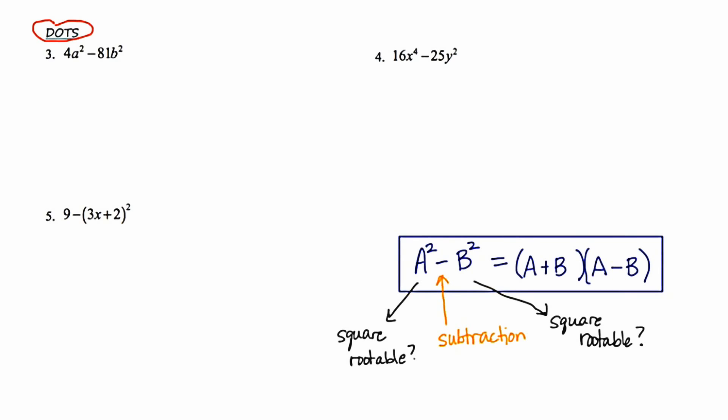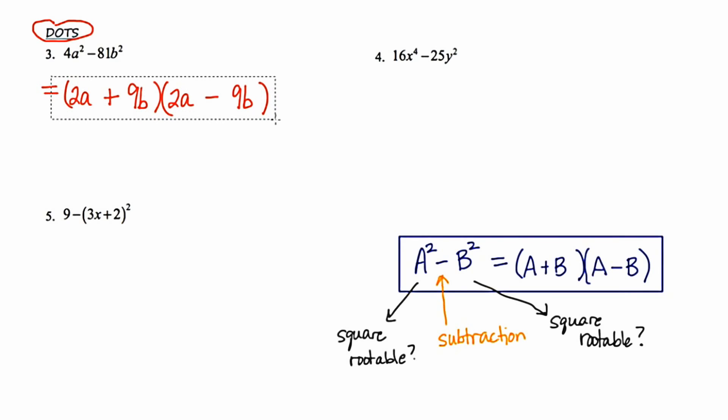Let's take a look at example three: 4a squared minus 81b squared. The first thing I notice is that there is a subtraction in between my terms, so it is a difference. Now I look at the terms that surround the subtraction symbol. Can I take the square root of the term on the left? Yes. Can I take the square root of the term on the right? Also yes. So I'm going to start by creating two binomials. The square root of 4a squared is 2a — that goes in the first position of each binomial. The square root of 81b squared is 9b — that goes in the second position of each binomial. Now I put the signs in: one gets a plus and one gets a minus. We've just factored using the DOTS method.